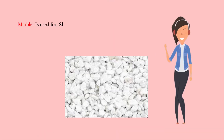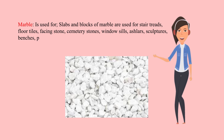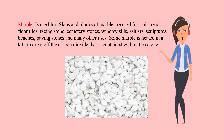Marble: slabs and blocks of marble are used for stair treads, floor tiles, facing stone, cemetery stones, window sills, ashlars, sculptures, benches, paving stones, and many other uses. Some marble is heated in a kiln to drive off the carbon dioxide that is contained within the calcite.